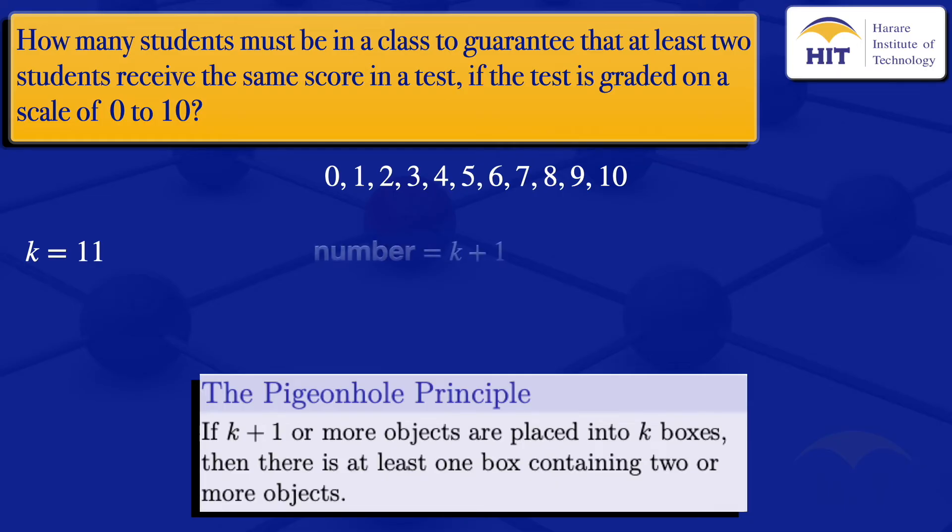So the number which is required is k plus 1. Our k is 11, so 11 plus 1 which gives us 12. So if we have 12 students in a class then we are guaranteed that at least 2 students will receive the same score.